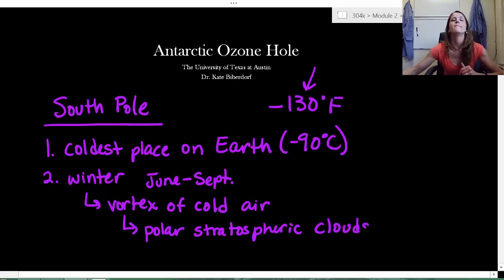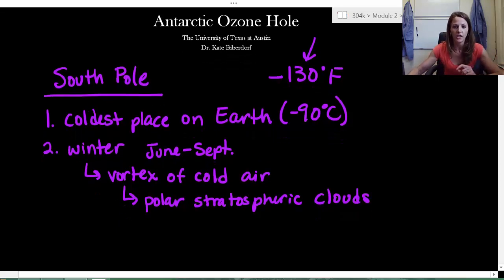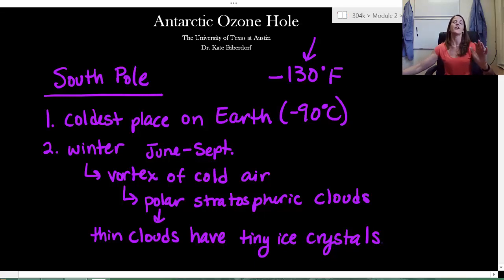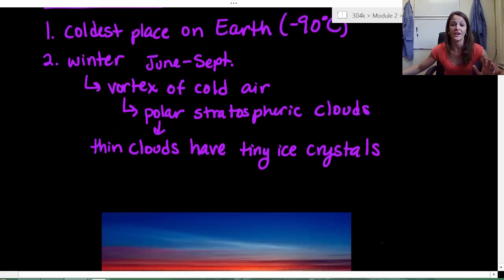They are unique and they are beautiful. I will show you a picture of them in just a second. But the reason I'm talking about these is because these polar stratospheric clouds are essentially just very thin clouds, nothing fancy about them, but they have tiny ice crystals on them, just all over. They're formed just covered in tiny ice crystals. So before I draw a picture of that, let me show you what these look like in real life.